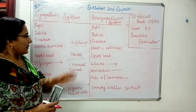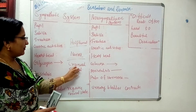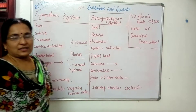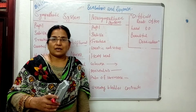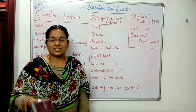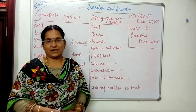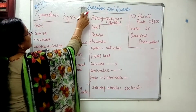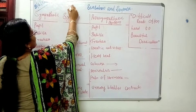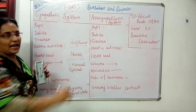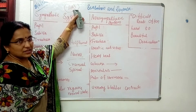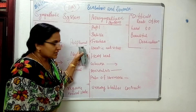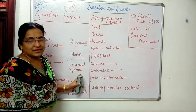The peripheral nervous system is made up of cranial nerves and spinal nerves. In certain situations, some reactions or responses take place beyond our conscious area. Such reactions are controlled by the autonomous nervous system, abbreviated as ANS. The autonomous nervous system is a part of the peripheral nervous system.